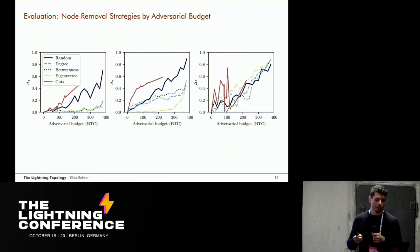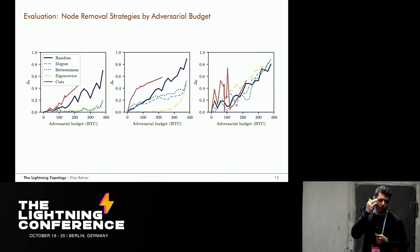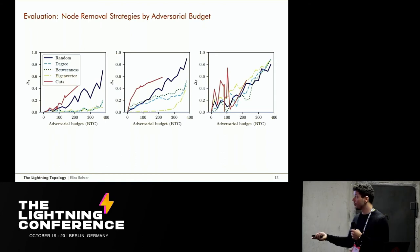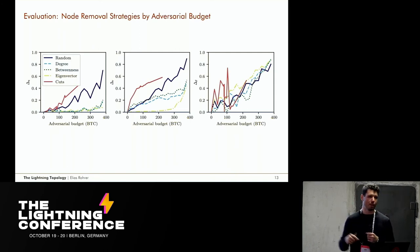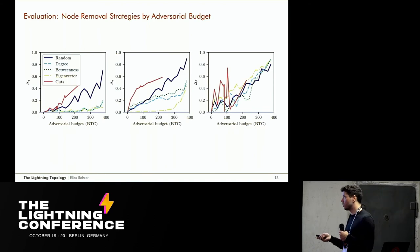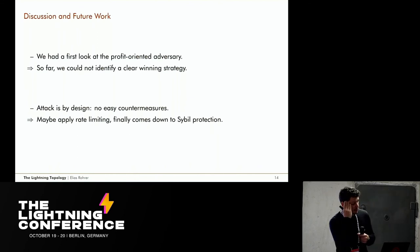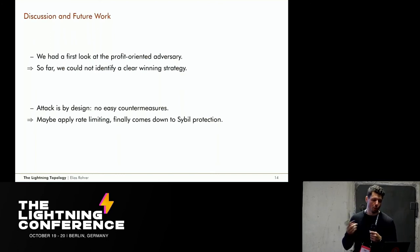However, when the adversary must have sufficient funds for node isolation attacks, efficiency matters more. The minimum cut set strategy is the most efficient for a resource-limited adversary, because it allows strategic removal of individual edges rather than entire nodes, making it the most promising approach for someone limited in capital who uses node isolation or channel extortion.